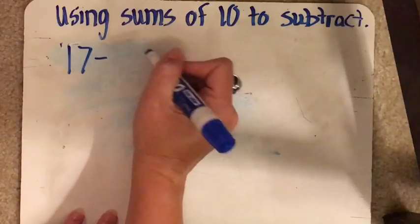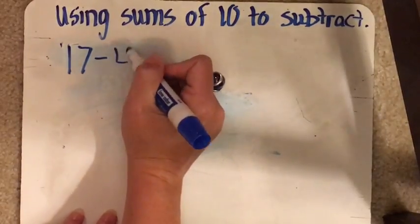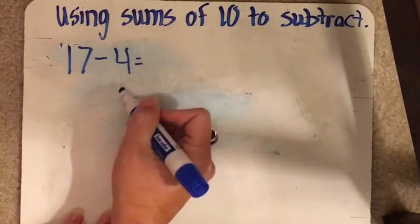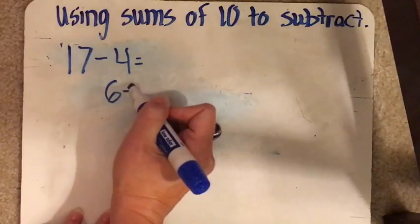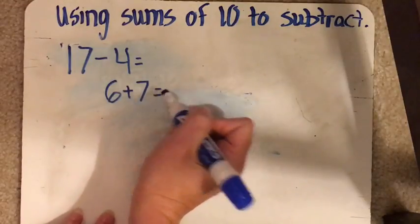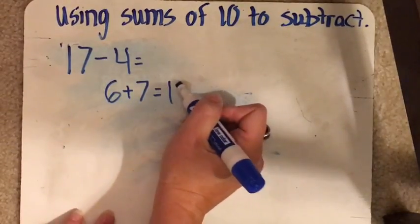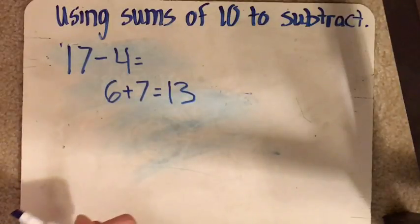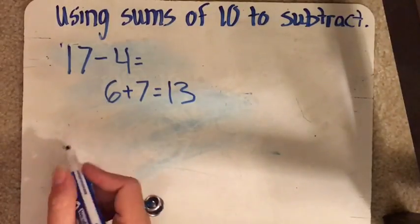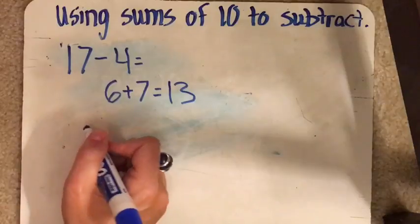So let's try 17 minus 4. So we're going to ask ourselves, what do we need to add to 4 to get to 10? And that is 6. And then we need another 7 to get to 17. And when we add those up quick, 6 plus 7 is 13. We know that was quick because 6 plus 6 equals 12.